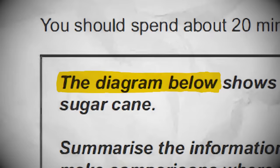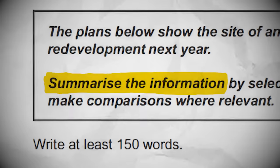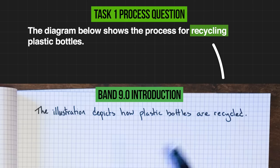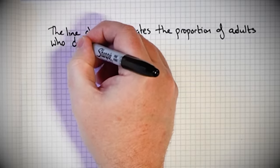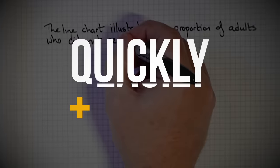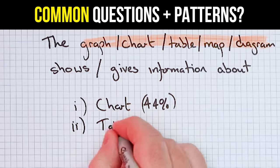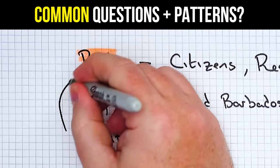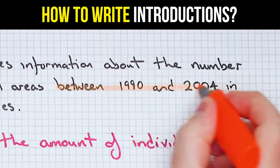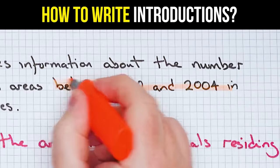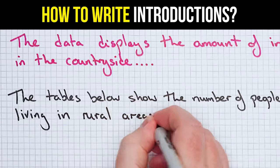I took all the IELTS Cambridge books and looked at all of the Task 1 questions to see if there were any patterns. If there are any common patterns, we can use these to write great introductions quickly and easily. So in this video, I'll answer two questions: are there any common questions and common patterns for Task 1 Academic, and how can we use these to quickly and easily write introductions?